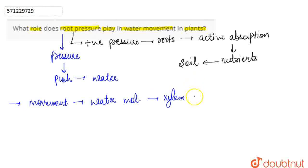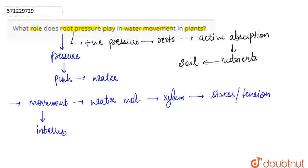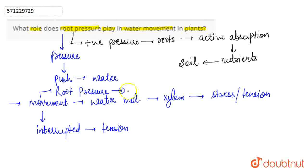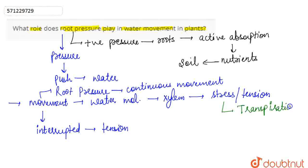The continuous chain of water molecules in the xylem can break under enormous tension. When there is a high level of stress or tension, this movement gets interrupted. This stress or tension is created due to transpiration. Because of transpiration, when conditions of stress or tension are created, the movement of water gets interrupted or stopped. So root pressure basically allows the continuous movement of water molecules in the xylem.